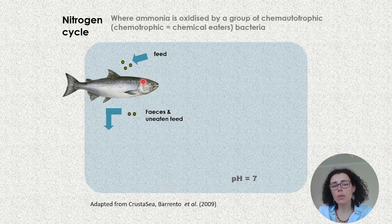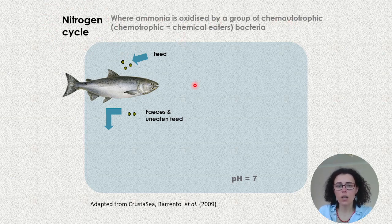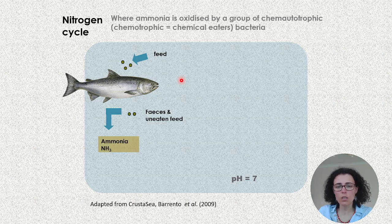So what is the biofilter? In the end, the biofilter is just a surface where you're going to have bacteria doing the natural nitrogen cycle, where ammonia is being oxidized by a group of chemolithotrophic bacteria. Fish will be feeding, excreting fecal matter, and uneaten feed will also accumulate in the system — most of what they excrete is going to be ammonia in molecular form.